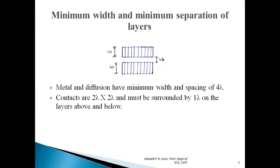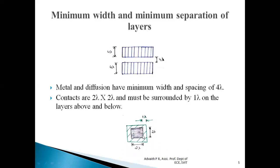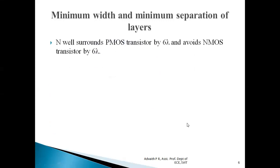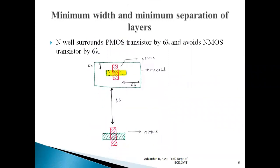Whenever two different layers meet at a point and there must be an electrical connection between them, we must employ contacts. Contacts are 2 lambda × 2 lambda and must be surrounded by 1 lambda from the layers above and below. The contact has a width of 2 lambda and a length of 2 lambda, and it is surrounded by N-type diffusion with a minimum width of 1 lambda on either side.